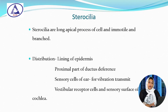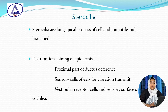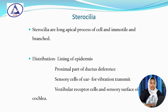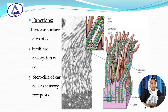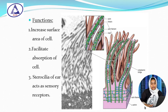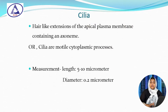Stereocilia are long apical processes of the cell that are immotile and branched. They are present on the lining epithelium of the epididymis, proximal part of the vas deferens, sensory cells of the ear for vibration transmission, vestibular receptor cells, and the sensory surface of the cochlea. Stereocilia increase the surface area of the cell, facilitate absorption, and stereocilia of the ear act as sensory receptors.